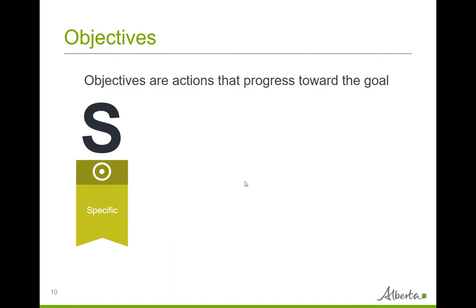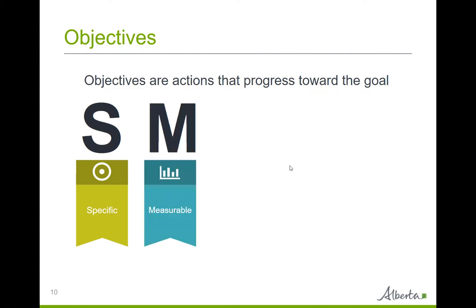Specific: your objectives should be well defined, clear, and unambiguous — clear to anyone that has basic knowledge of the situation and the organization. Measurable: funders want to know if the objective can be achieved and how far away from completion it is. They want specific criteria that measures your progress and shows that you have progressed in reaching your objectives, and they also want to know when you will achieve your objectives.